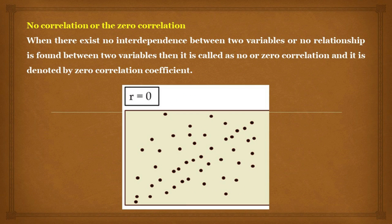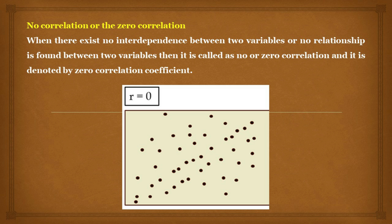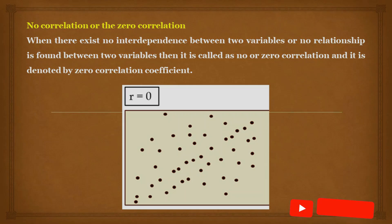Lastly, we discuss no correlation or zero correlation. When there exists no interdependence between two variables, or no relationship is found between them, it is called no or zero correlation, and it is denoted by a correlation coefficient of zero.